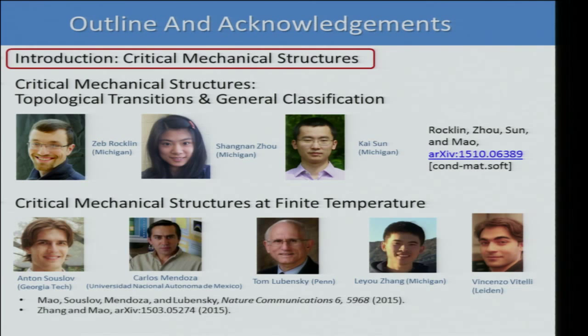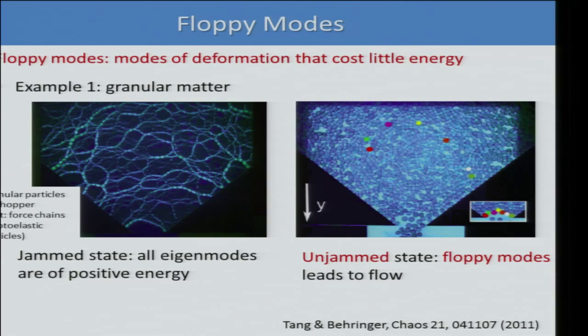Let me start with the introduction. To understand critical mechanical structures, it is central to first introduce the concept of floppy modes, which are modes of deformation of a system that cost little energy. Let me explain that using a simple example of granular materials. Here we have granular particles packed in a hopper, and I'm showing two different states.